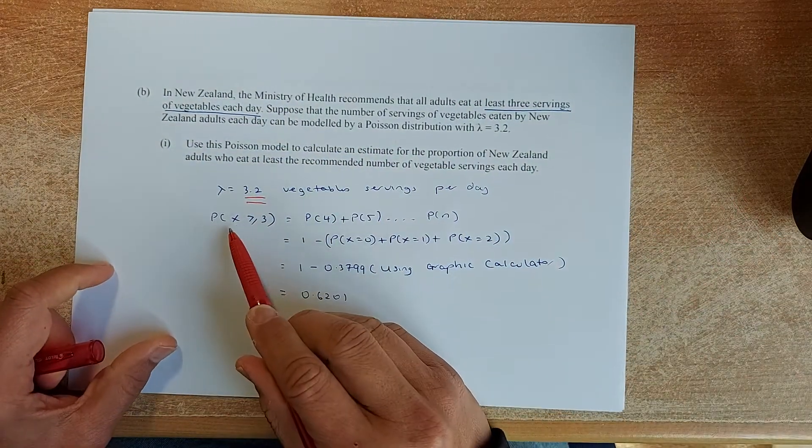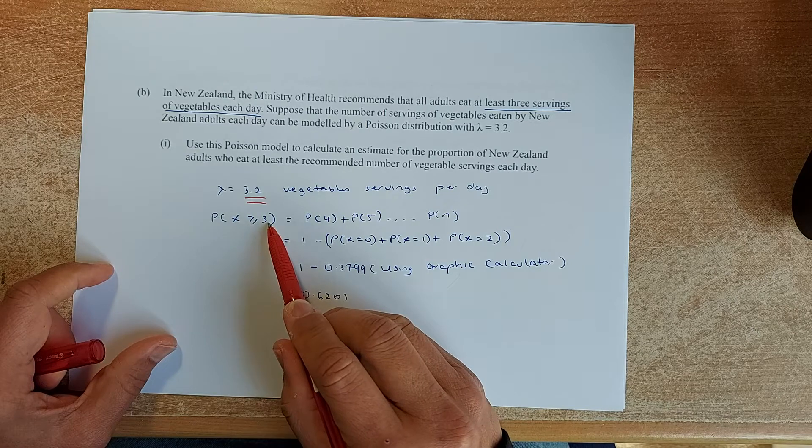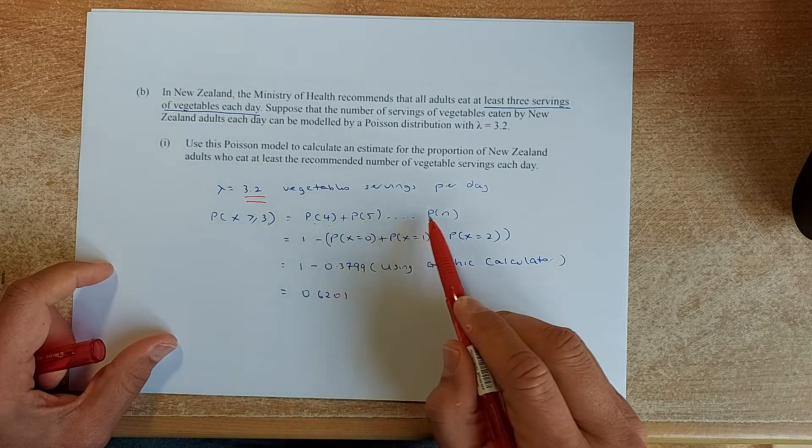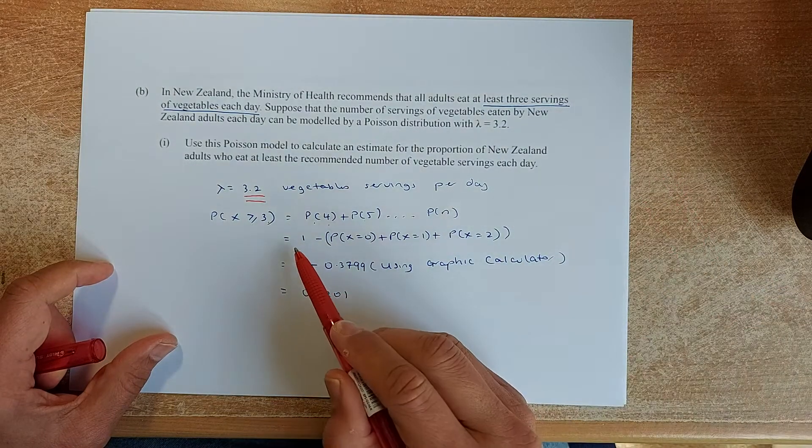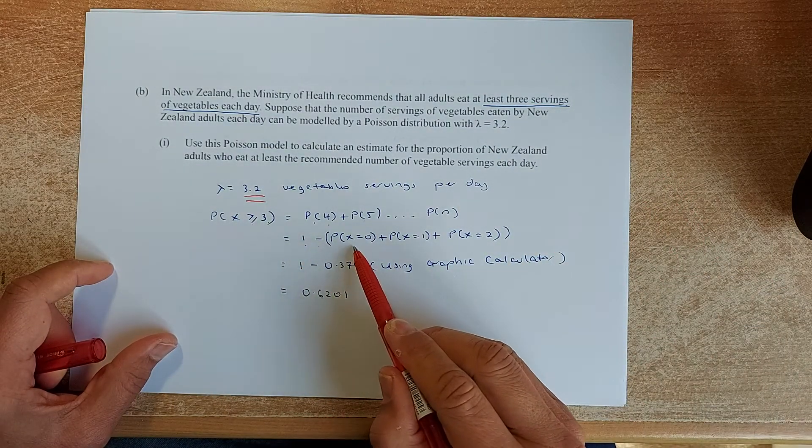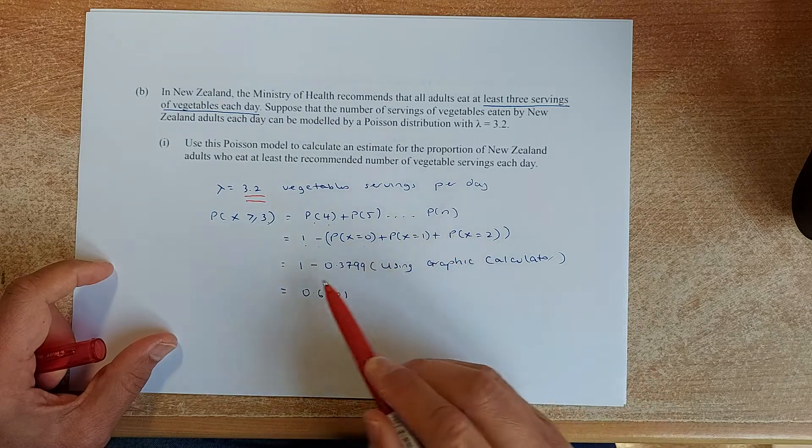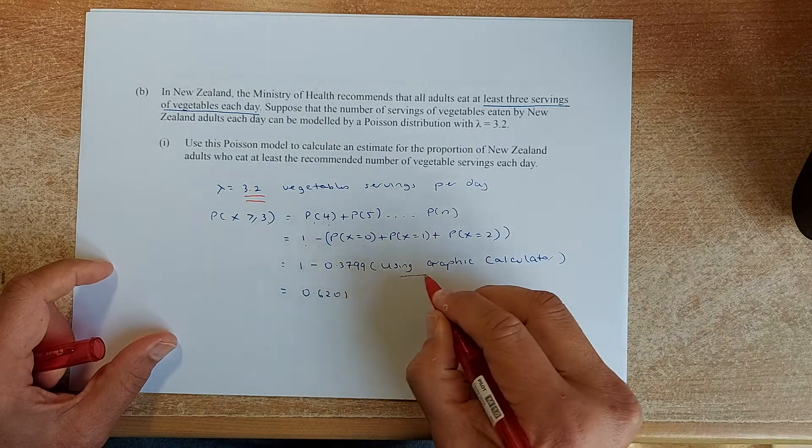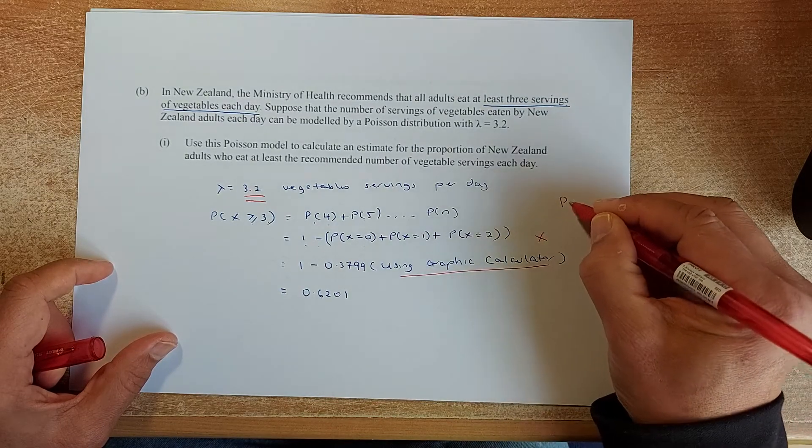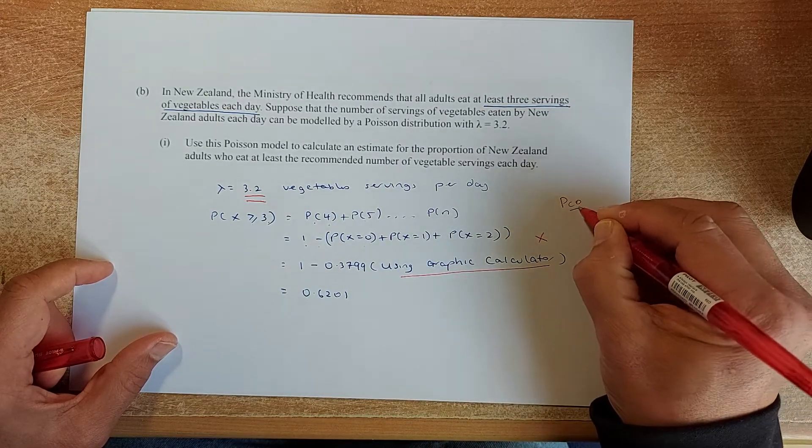Your lambda or your mean is 3.2. They are looking for probability of x greater than or equal to 3. So they are looking for probability of 4, 5, 6, 7 and so forth. To make your life easier, you take 1 minus probability of x equals 0, 1 and 2. And to use that, use your graphic calculator. Your x accumulated, PCD, accumulative. And x equals to 2.